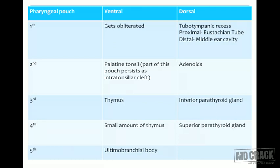The pharyngeal pouches: First pouch - ventral part obliterates; dorsal part gives rise to tubotympanic recess (proximal part becomes the Eustachian tube, distal part becomes the middle ear cavity). Second pouch - ventral part gives palatine tonsils, dorsal gives adenoids. Third pouch - ventral becomes thymus, dorsal becomes inferior parathyroid gland. Fourth pouch - ventral gives small amount of thymus, dorsal gives superior parathyroid gland. Fifth pouch gives rise to ultimobranchial bodies which produce parafollicular C cells.